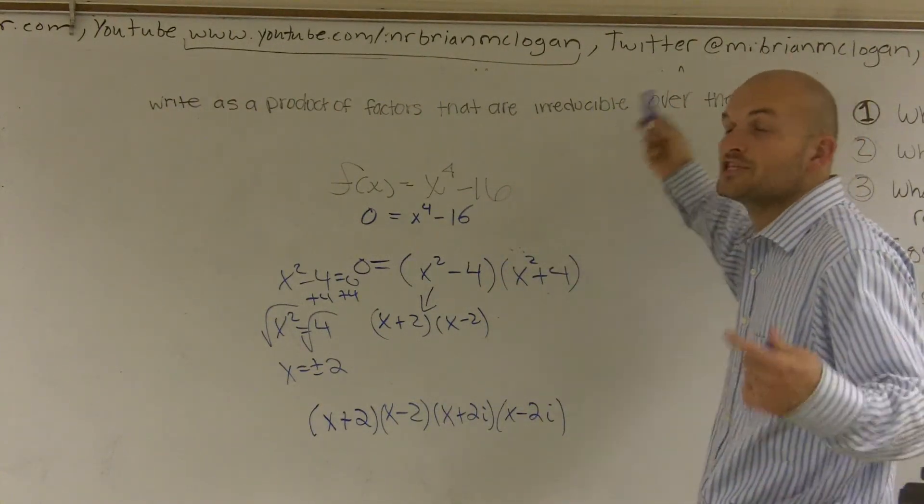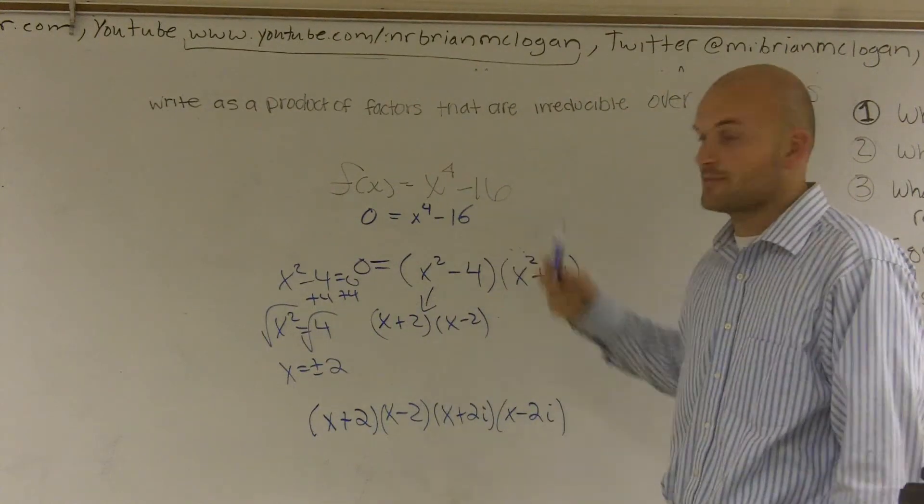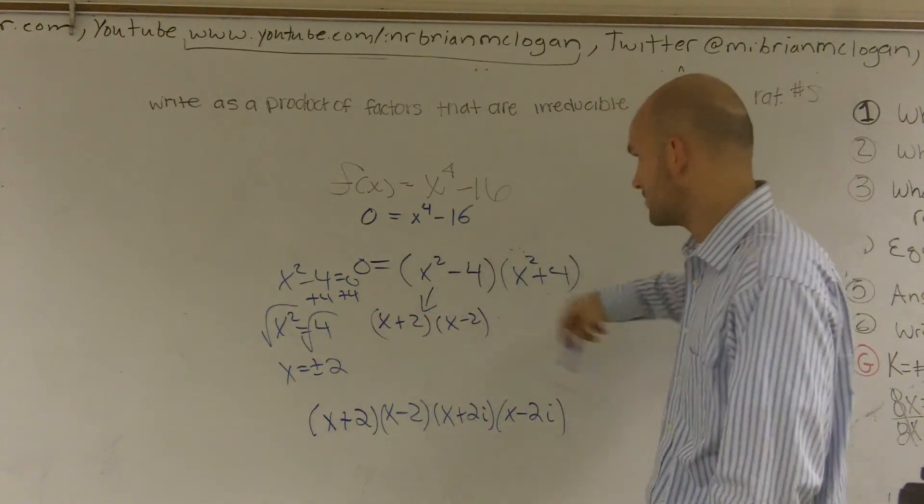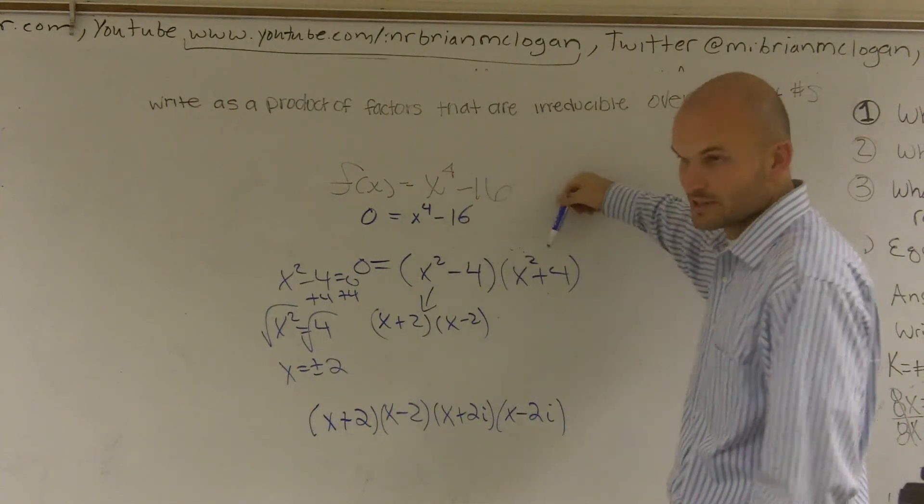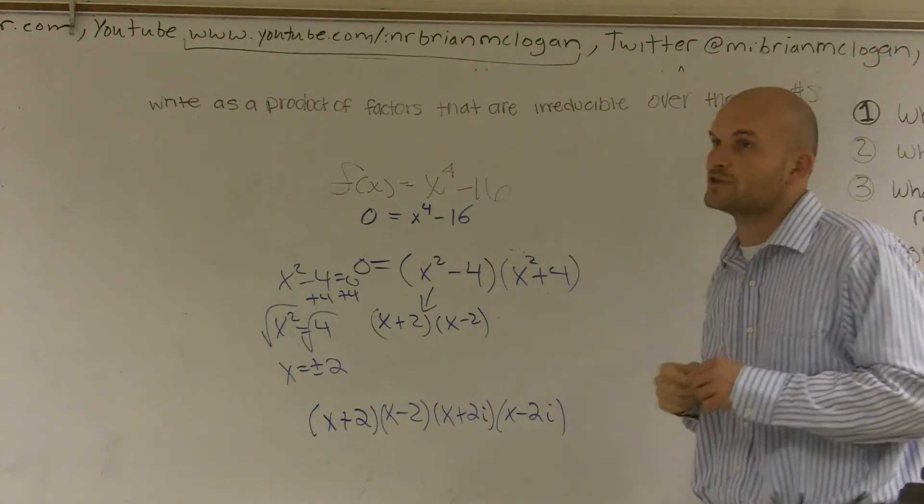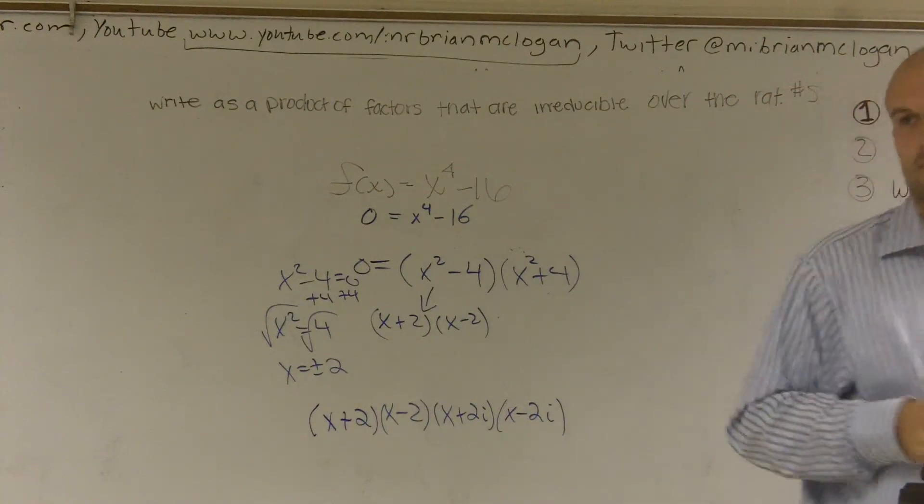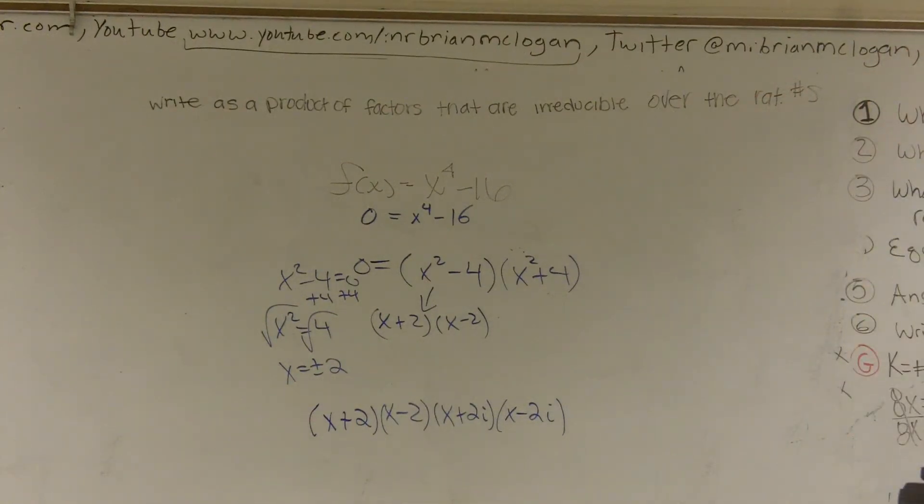And as I'm saying irreducible, it means you cannot reduce it anymore over any rational number. And this is it, reduced. But here it's not reduced, you can still simplify this and we can simplify that. So that's what they mean by irreducible. You cannot reduce it. How do you put it over the rational numbers? You're not putting it over rational numbers. It says write as a product of factors that are not reducible over the rational numbers. That means you cannot reduce it any further. Oh, okay. That's pretty much all it's saying.